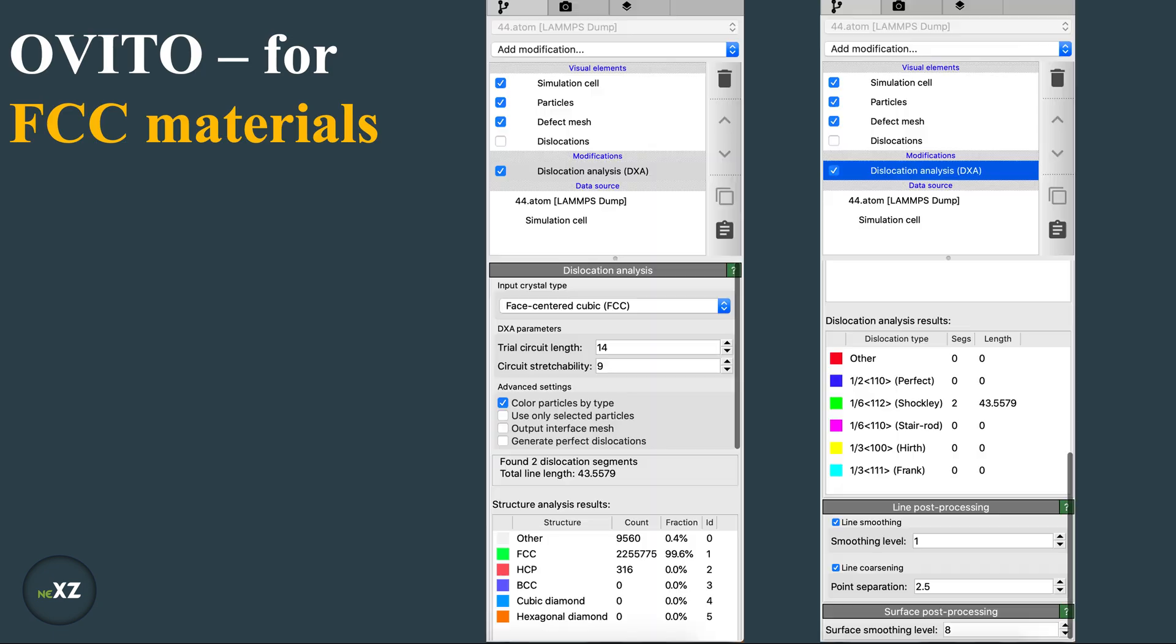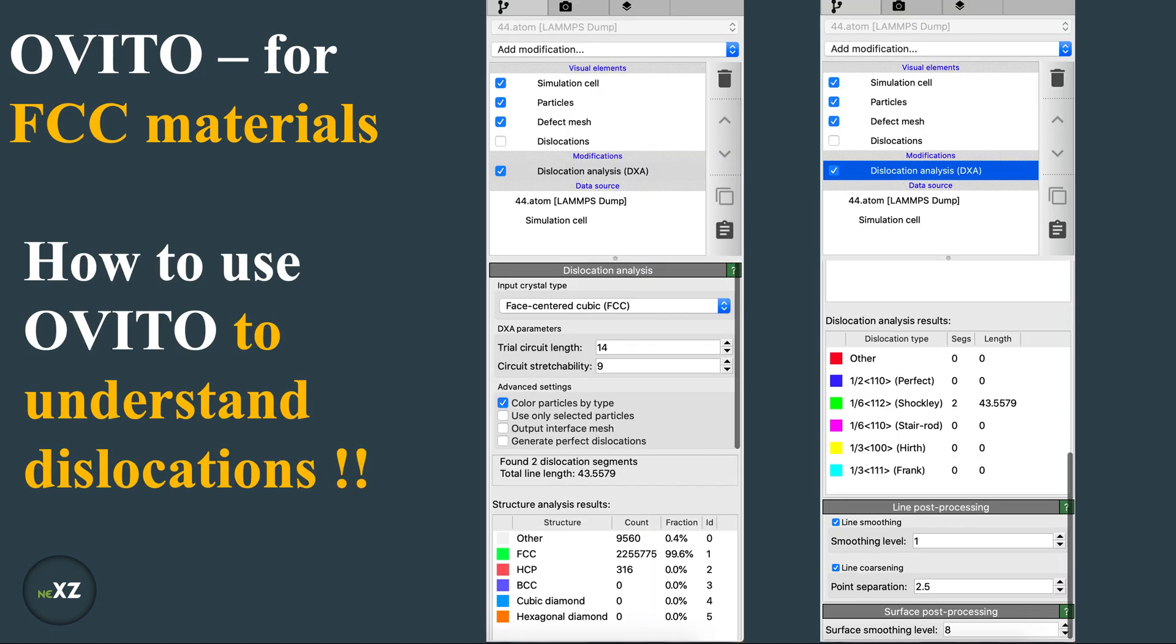And now we use OVITO to understand this. So in OVITO, you can see here I have inputted the simulation cell which is like 44.atom which is my dump file atom. And I have put modifications, DXA modification dislocation analysis. So I input the crystal structure FCC and these are the dislocation analysis results.